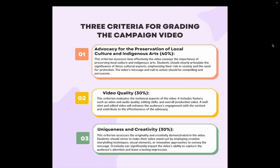Here are the three criteria for grading the video campaign. First, 40% will be allotted for the advocacy for the preservation of local culture and Indigenous arts. This criterion assesses how effectively the video conveys the importance of preserving local culture and Indigenous arts. You should clearly articulate the significance of these cultural aspects, emphasizing their role in society and the need for protection. The video's message and call to action should be compelling and persuasive. Second, 30% is allotted for video quality. This criterion evaluates technical aspects such as video and audio quality, editing skills, and overall production value. A well-shot and edited video will enhance the audience's engagement and contribute to the effectiveness of your advocacy.